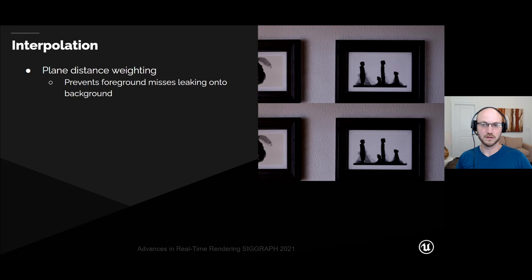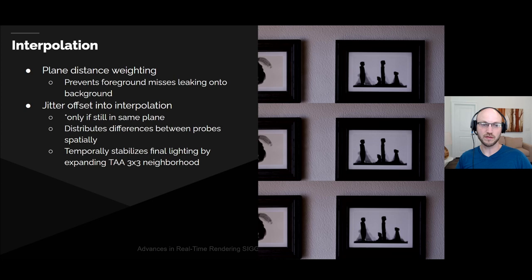To interpolate from the screen-space radiance cache to the pixels on the screen, we weight the radiance probes by their distance from the pixel's plane — the plane derived from the pixel's position and normal — which prevents foreground misses from leaking onto the background. We also jitter the offset into the interpolation from the radiance cache, but only apply the jitter if the jitter position still lies in the same plane as the original pixel, ensuring the jitter itself does not cause interpolation to fail. The jitter distributes differences in lighting between probes spatially and temporally stabilizes the final lighting by expanding the temporal anti-aliasing's neighborhood clamp.